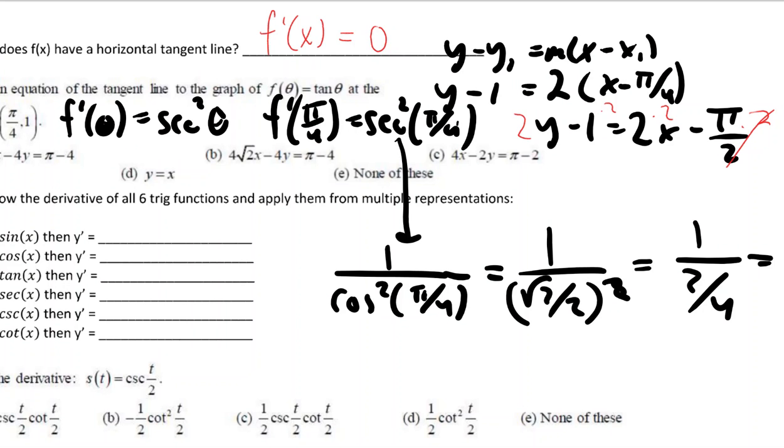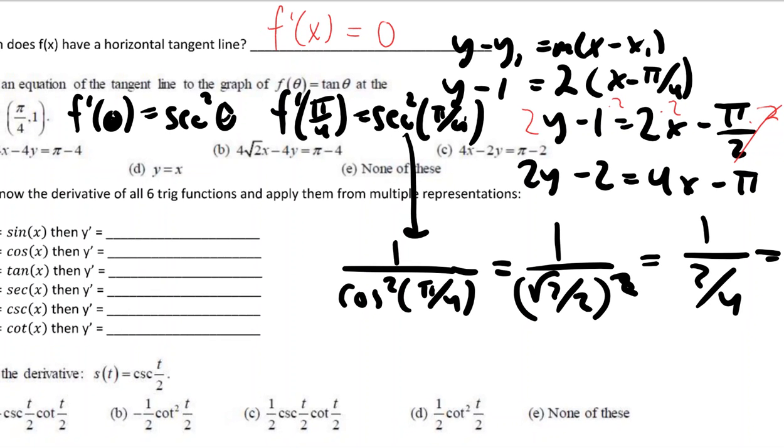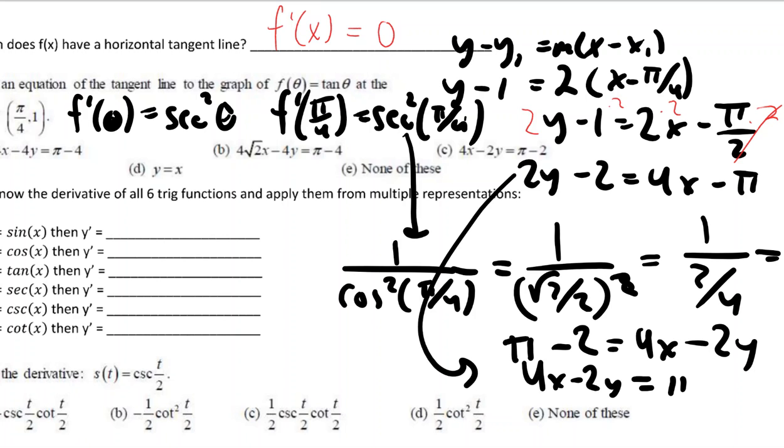So that you're multiplying both sides by the same thing. And then if we start to compare, it looks like on the right side, if I leave 4x there and I subtract the 2y over, and then if I add this pi over and leave this negative 2 over there, I get 4x minus 2y is pi minus 2, which is choice C.